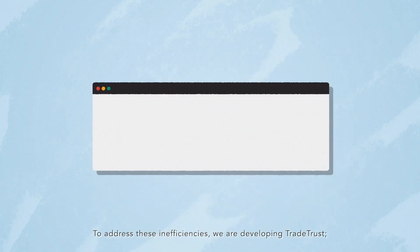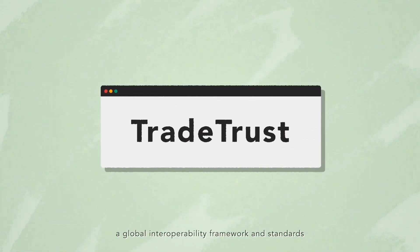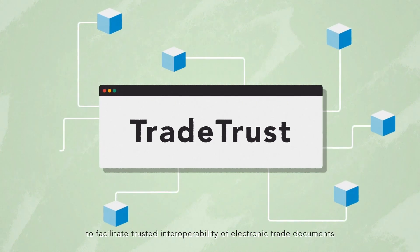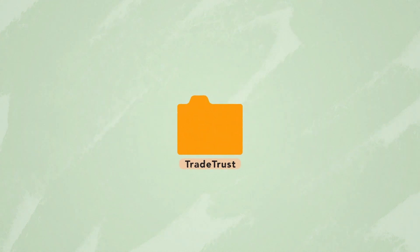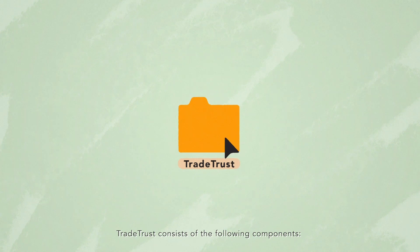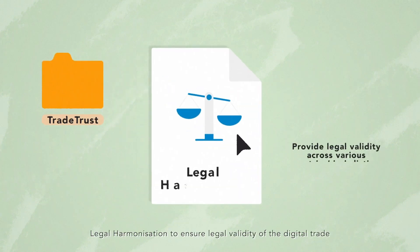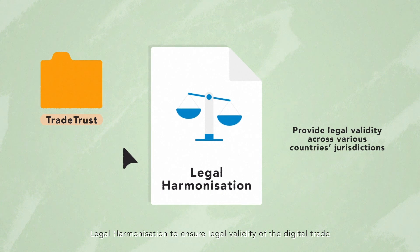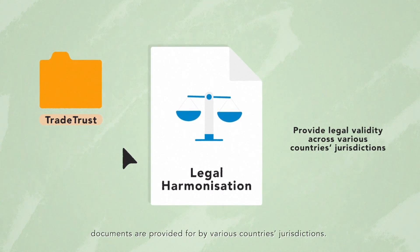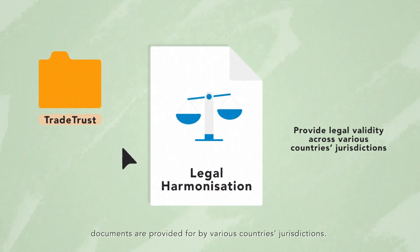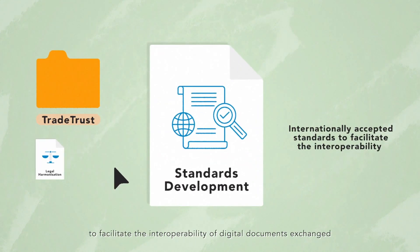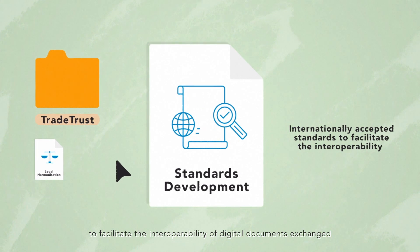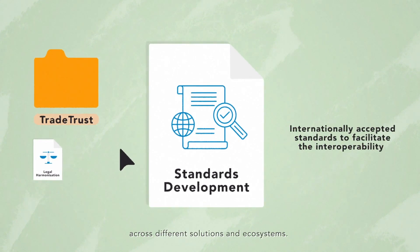To address these inefficiencies, we are developing Trade Trust — a global interoperability framework and standards to facilitate trusted interoperability of electronic trade documents across different digital solutions and ecosystems. Trade Trust consists of the following components: legal harmonization to ensure legal validity of the digital trade documents are provided for by various countries' jurisdictions; and standards development to promote the use of internationally accepted standards to facilitate the interoperability of digital documents exchanged across different solutions and ecosystems.